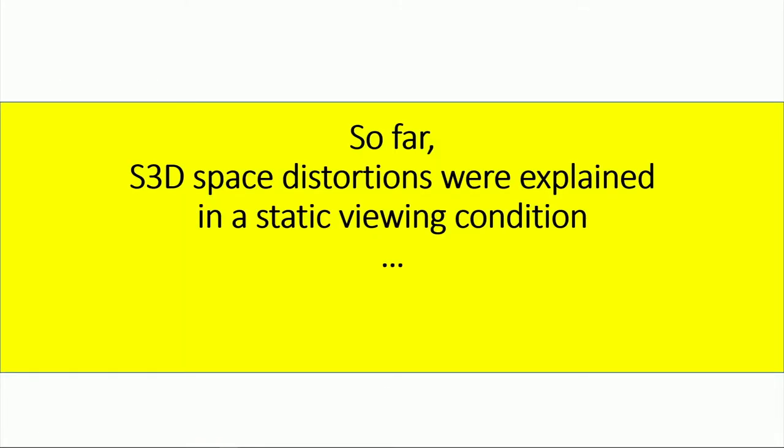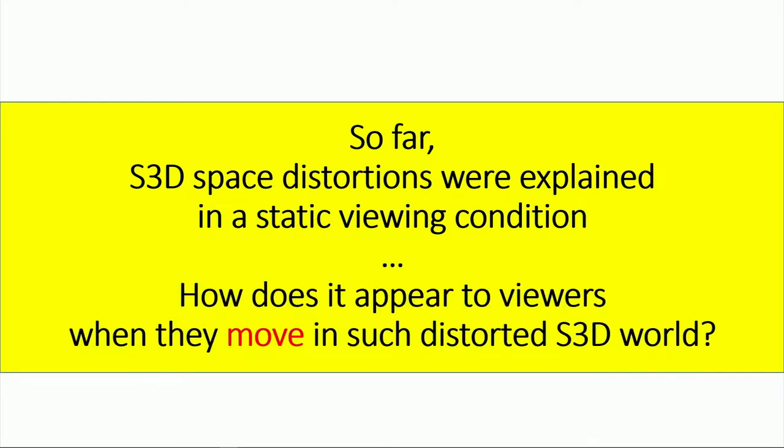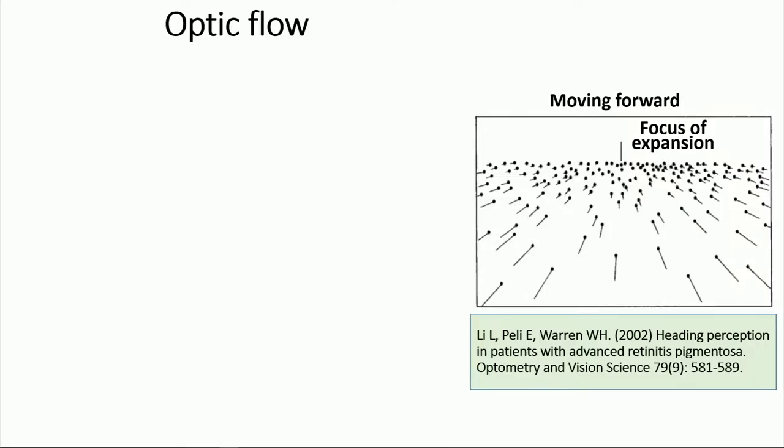So far, stereoscopic 3D space distortion was explained in a static viewing condition. That's a little bit boring. Then, how does it look like if the viewer is moving inside of this distorted space? In order to do that, to understand the effect of self-motion in the viewer's perspective, first, we need to know the concept of optic flow.